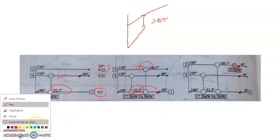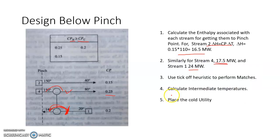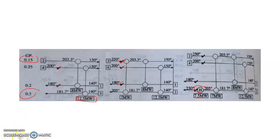You can design above pinch and below pinch separately, but the combined network must show all intermediate temperatures. A tick mark on a stream means it is satisfied in one exchanger directly from pinch to target temperature. Two exchangers for a stream means an intermediate temperature must be shown. This was a simpler example; we will look at more complex heat exchanger network design examples using the pinch design method in upcoming videos.